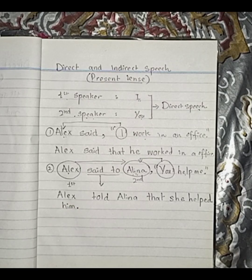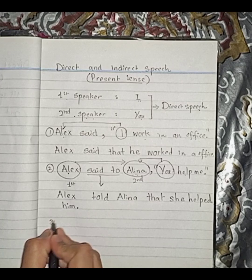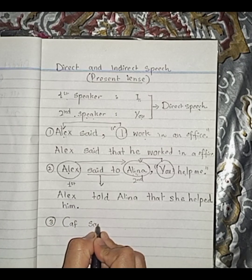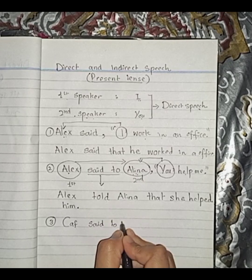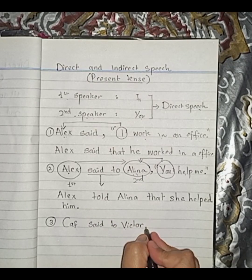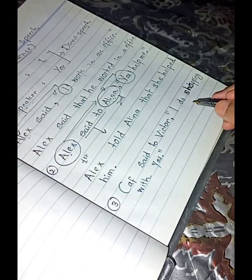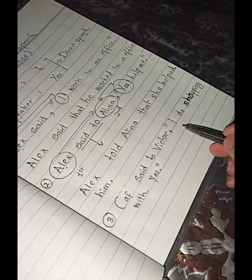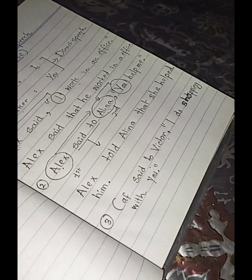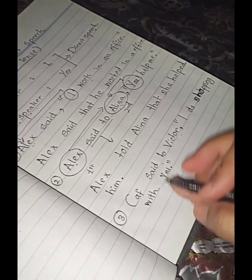Let's take a look now at another example. Now here we are starting with subject I. Okay. So we have in our next example now. Kev said to Victor, 'I do shopping with you.' Now let's change it into indirect speech.